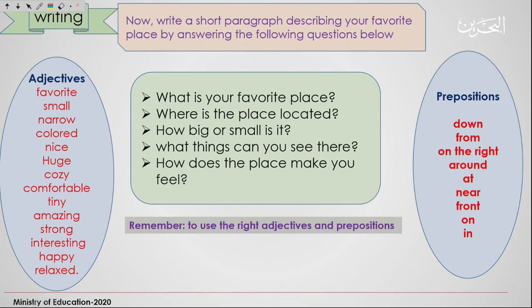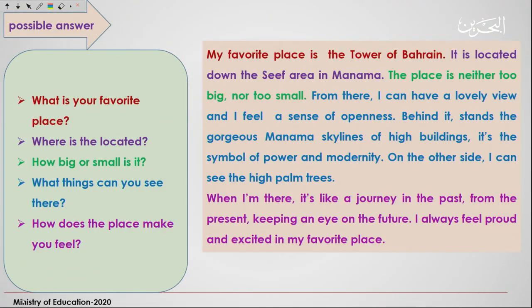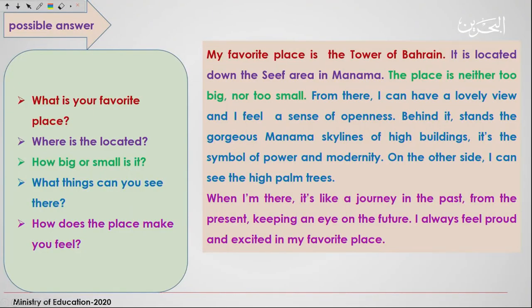Okay, let's look at a possible answer. What I did here is use colors to match each question with its corresponding answer — have a look and read it for one minute. The questions we're tackling are: what is your favorite place, where is it located, how big or small is it, what things can you see there, and how does the place make you feel?